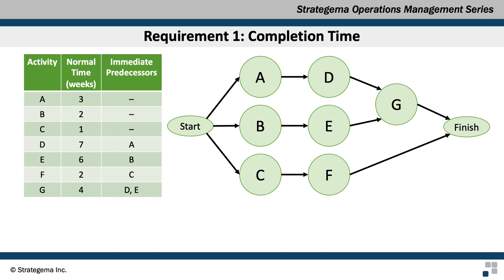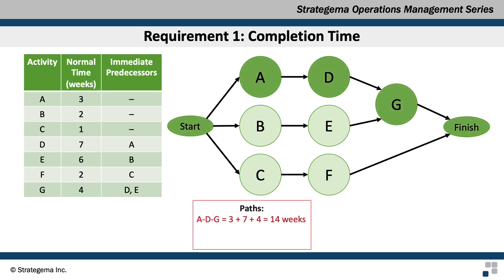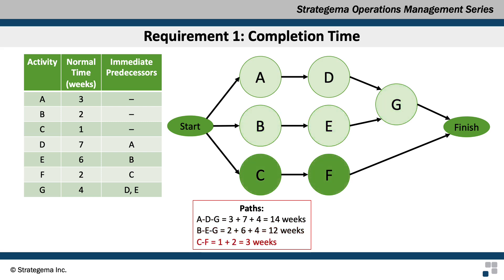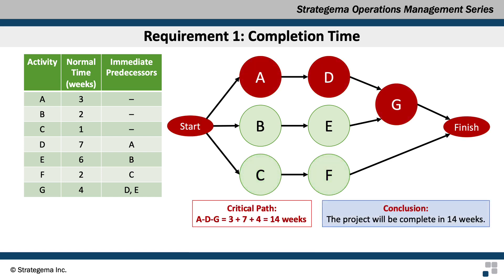Now we can determine all of the paths through the project along with their completion times. Path 1 is A, D, G with times of 3, 7, and 4 weeks for a total of 14 weeks. Path 2 is B, E, G with times of 2, 6, and 4 weeks for a total of 12 weeks. Path 3 is C, F with times of 1 and 2 weeks for a total of 3 weeks. Our critical path is A, D, G for a total of 14 weeks since it takes the longest time.